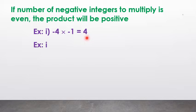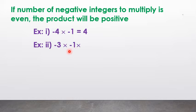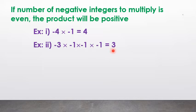Second example: (−3) × (−1) × (−1) × (−1) = +3. Here there are 4 negative signs. 4 is an even number, so the product is positive.